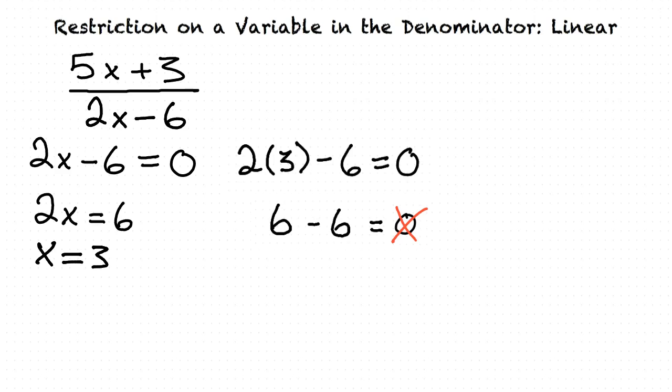So let me get this straight. If there's a variable in the denominator, that variable can't take a value that makes the denominator 0. That is correct.